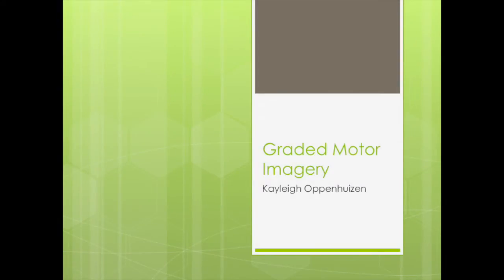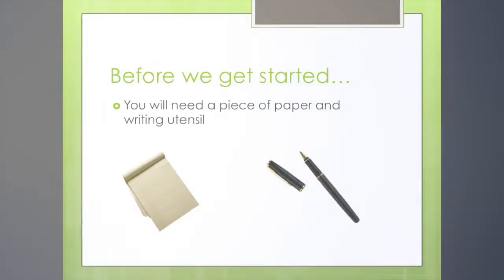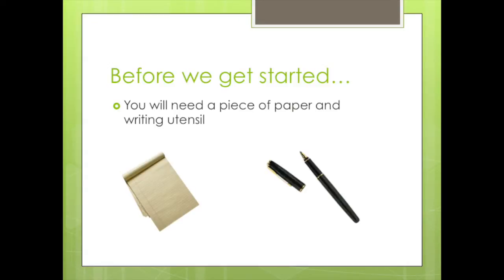Hi everybody, it is Kaylee here, and today we're going to talk about graded motor imagery. Before we get started, you're going to need a piece of paper and a writing utensil, so go ahead and pause this presentation and grab a scrap piece of paper and something to write with, and label two columns — one column right and one column left — and we will refer back to this later.